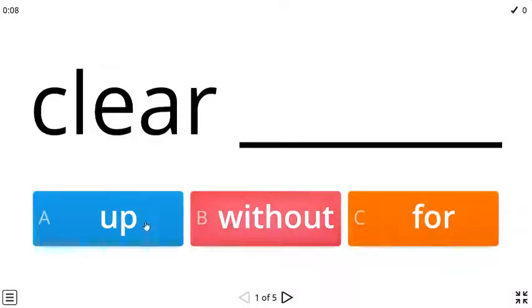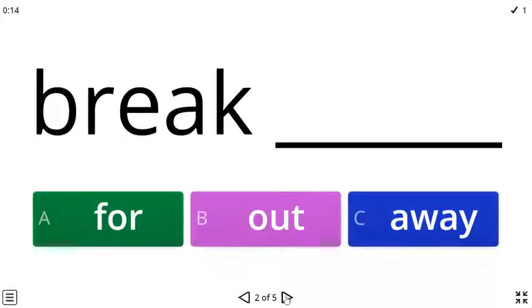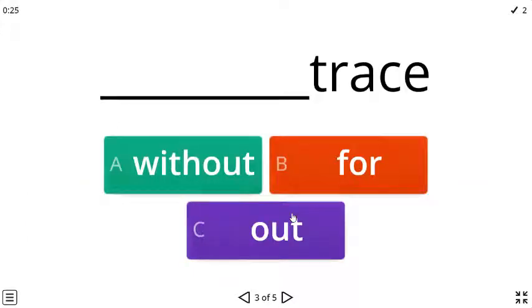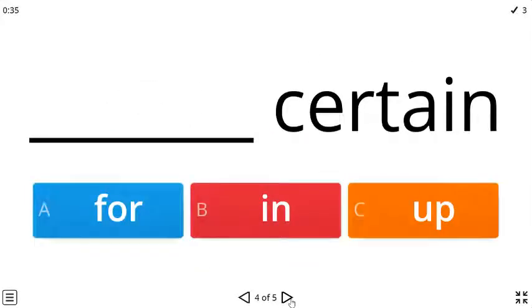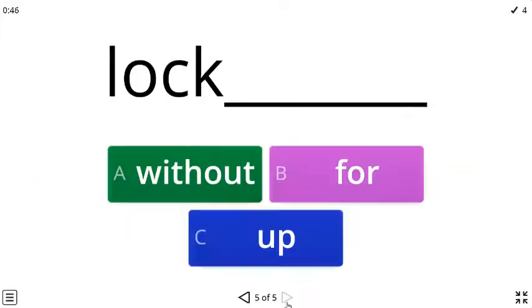So what shall we say: clear up, clear without, or clear for? Yes, clear. And break: out or away? You note, break out. To the next, shall we say without trace, or for trace, or out trace? Without trace. For certain, in certain, or up for certain? For sure.